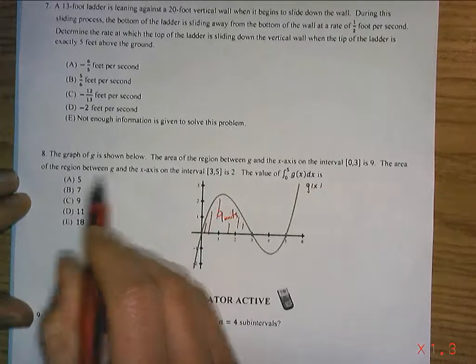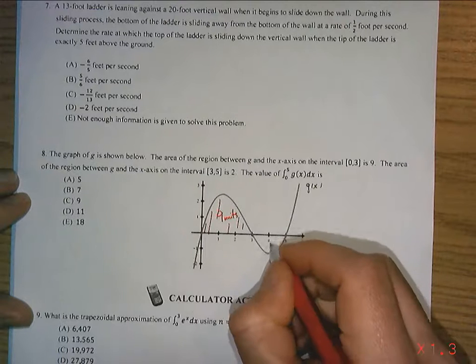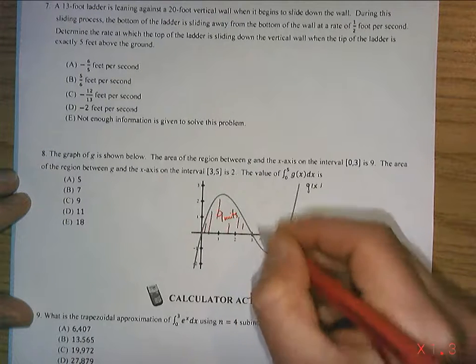The area of the region between G and the x-axis between 3 and 5 is 2 units, but it is below the x-axis.